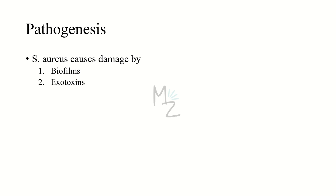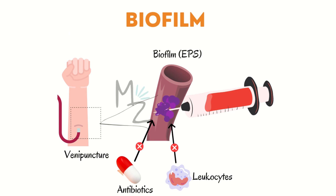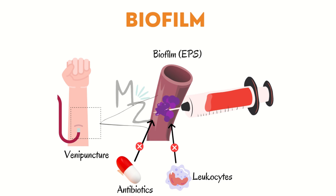During venipuncture, bacteria from human skin flora get onto the needle and gain access to the vein, entering the bloodstream. Bacteria on the venous catheter start to secrete a loose polysaccharide layer around them to form the biofilm. Bacteria can then pass on genetic and cell signaling material. This thick polysaccharide covering — the biofilm — evades antibiotics and leukocytes (WBCs), making it difficult to treat infections and leading to catheter-associated infections.